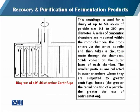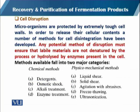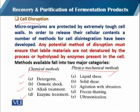There is also a multi-chamber centrifugation technique. These are different kinds of centrifugation techniques which we can apply to separate biomass and insoluble particles depending on their size and density. When we separate the soluble and insoluble fractions, if the product is intracellular, we start cell disruption. For cell disruption there are chemical methods — detergent, osmotic shock, alkali treatment, enzyme treatment — and physical/mechanical methods — liquid shear, solid shear, agitation with abrasives, freeze-thaw, and ultrasonication.